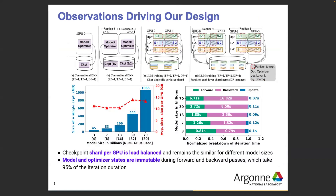We started by looking at how the important data structures are distributed. The state you want to checkpoint is basically the model parameters on one hand, and then the optimizer state on the other. The optimizer state is an auxiliary data structure that is even larger in terms of size than the number of parameters — usually four times larger if you use an optimizer. So you have all these heterogeneous data structures on a large number of GPUs, and with 3D parallelism there is complexity in getting a consistent checkpoint.